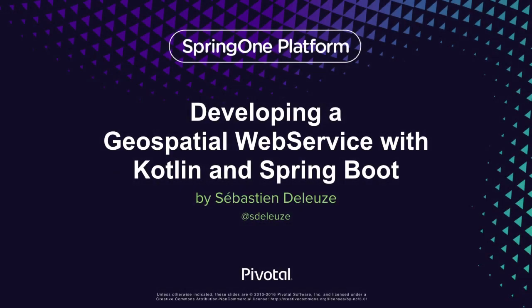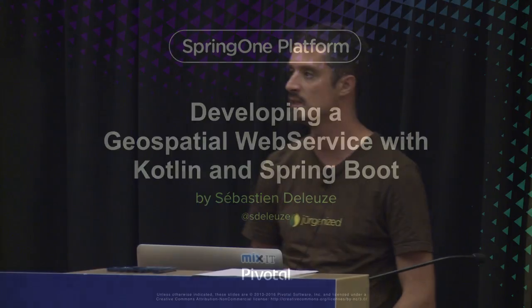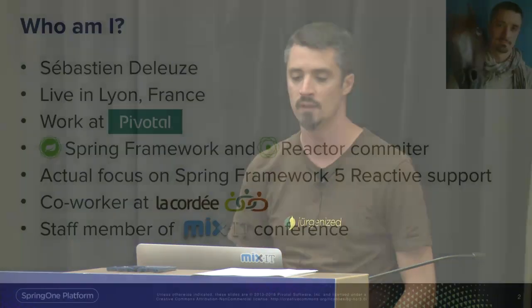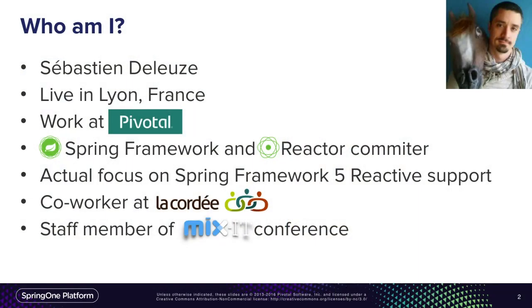Welcome, everybody. Today we are going to see how to develop a geospatial web service with Kotlin and Spring Boot. Let me quickly introduce myself. I live in France, as you can hear with my accent. I work at Pivotal, mainly on Spring Framework and on Reactor. My actual focus is on the reactive support in Spring Framework 5. I'm a co-worker at a co-working space called La Corde, and I'm also a staff member of MixIT conference, which is a conference that happens in France.